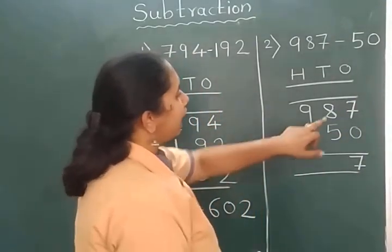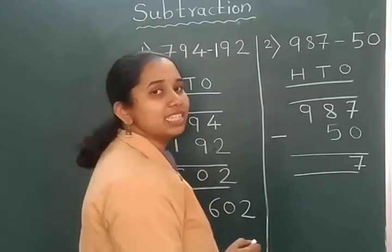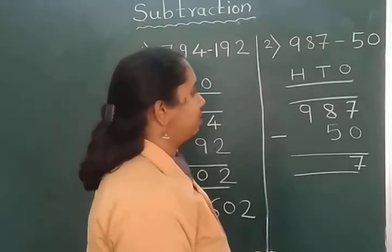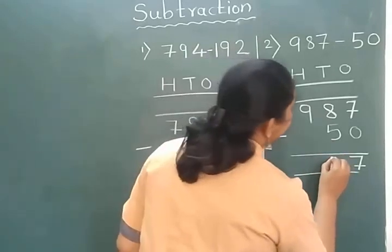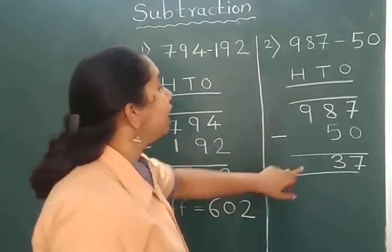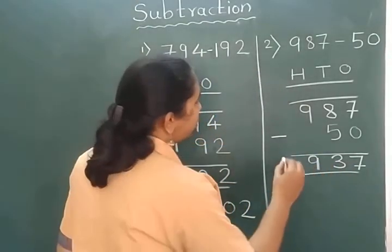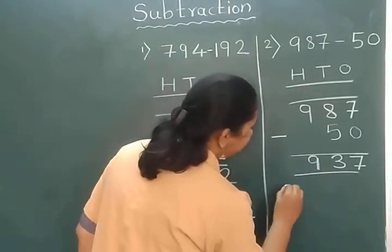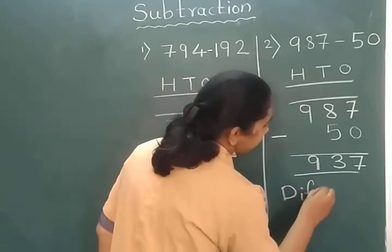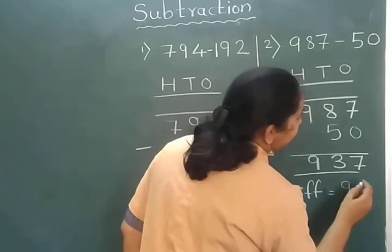Now 8 minus 5, answer is 3. And 9 remains as is. So our answer, our difference, is 937.